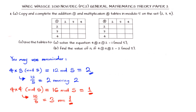Now for the addition table: 2 + 2 = 4, which is fine. 2 + 3 = 5, which rounds to 0. 2 + 4 = 6, which gives 1 in modulo 5. 3 + 3 = 6, which is 1. 3 + 4 = 7, which is 2. 4 + 4 = 8, which is 3 in modulo 5. The addition table is quite straightforward.